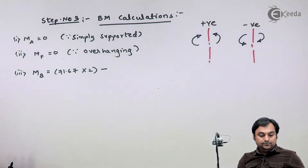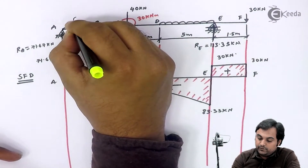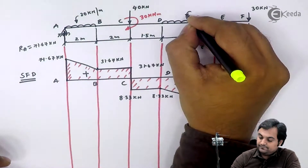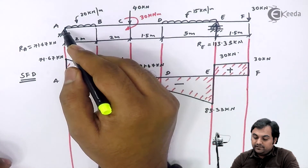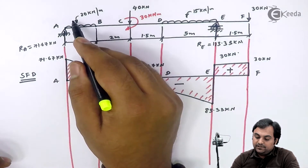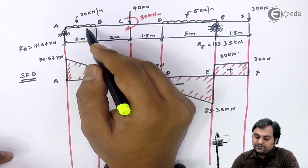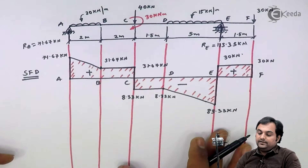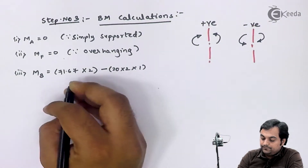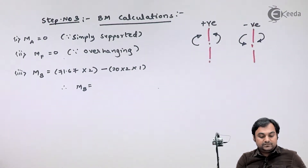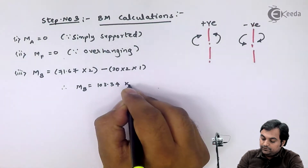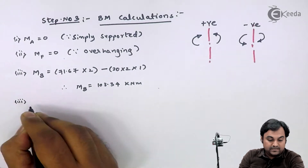Next, subtracting the UDL of 20 kN/m: taking the moment at point B, we have minus 20 into 2 multiplied by 1 (half the distance), as the UDL produces an anti-clockwise moment to the left, making it negative. So minus 20 into 2 into 1. The moment at B comes out to be 103.34 kN·m.